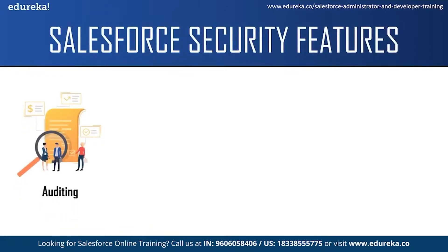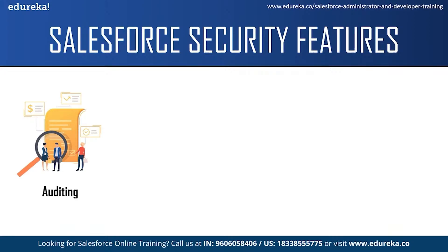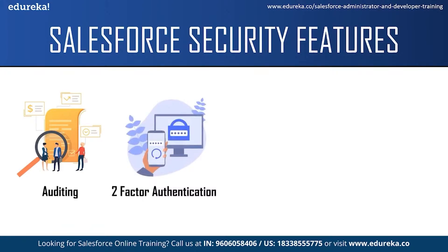The first feature is auditing. Salesforce keeps track of all login attempts for the past six months, including the location of the login attempt and the IP addresses. Administrators can also turn on field history tracking, which gives visibility into field value changes and the users who performed them. The next feature is two-factor authentication. Administrators can turn on company-wide two-factor authentication — when a user tries to log in from a different system or IP address, they can be asked for verification such as an OTP sent to their phone or email.